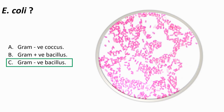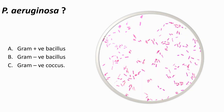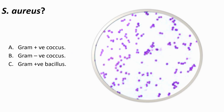E. coli are gram negative bacilli. B. subtilis are gram positive bacilli. Pseudomonas are gram negative bacilli. S. aureus are gram positive cocci. Thank you for listening, and I hope this short video on gram staining has helped.